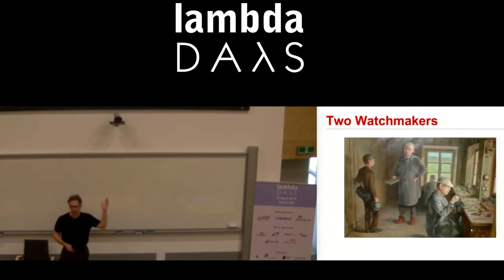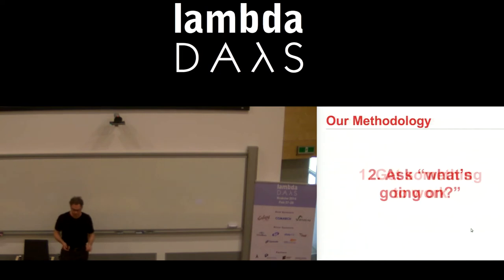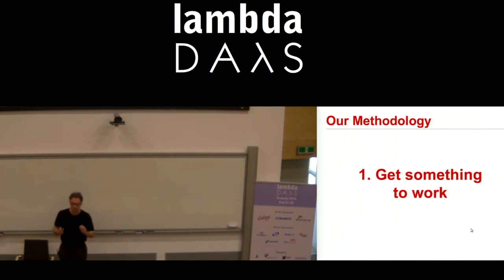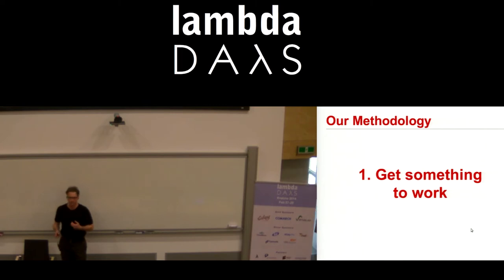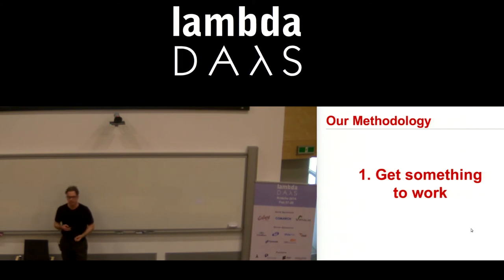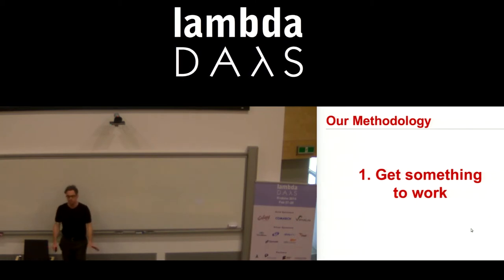This started out as a talk I gave at OSCON last year. I'm just going to jump into some code. The basic gist is: when you are writing code there are sort of two phases. First, just get the thing to work. Identifying problems is hard enough, solving problems is hard enough — don't worry about beauty, don't worry about correctness, don't worry about making sure everything is pristine. Just get it to work.